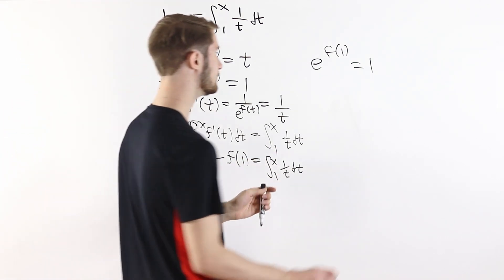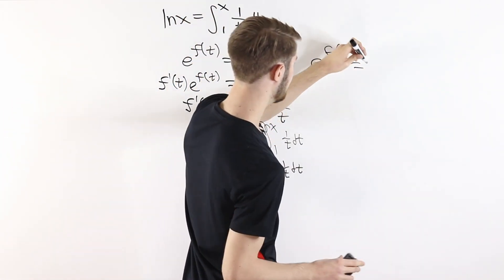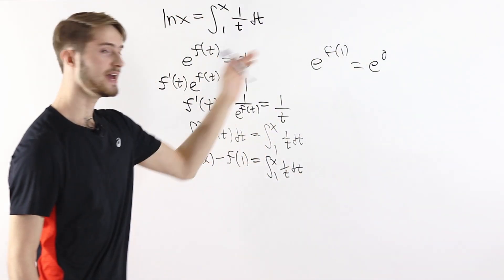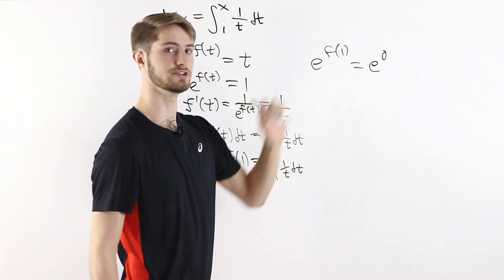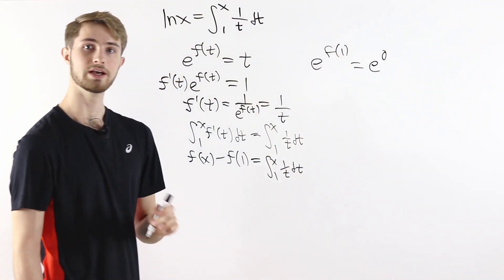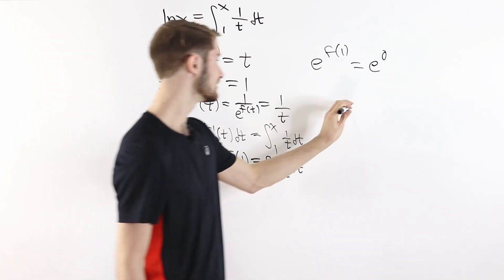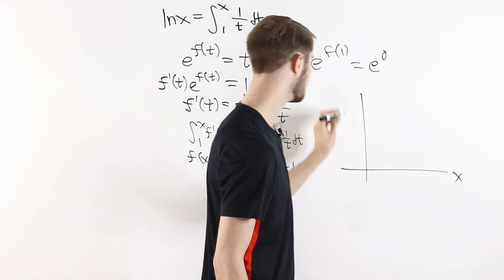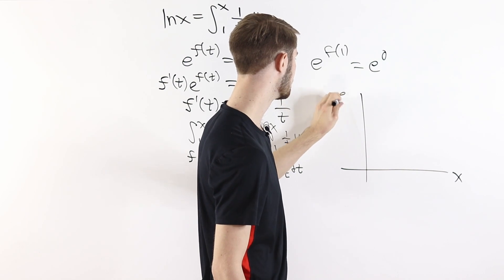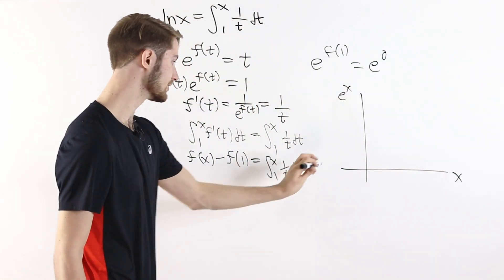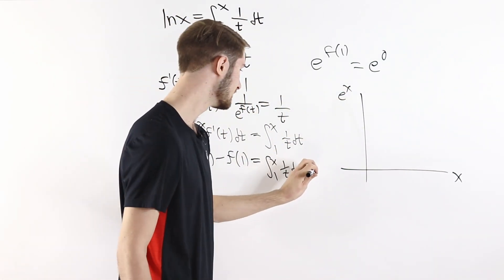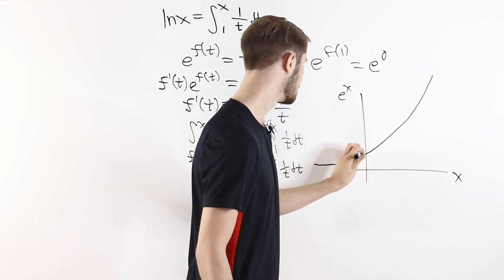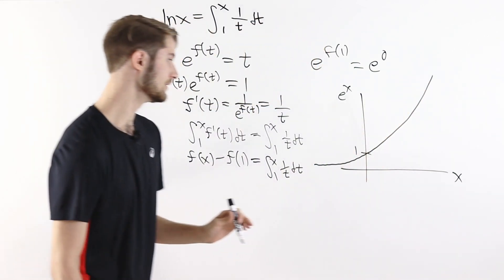We know that 1 is the same as e to the 0, so e to the f of 1 equals e to the 0. If we look at the graph of e to the x, we have x on the horizontal axis and e to the x on the vertical axis. The function looks something like this, and right here this is the value of 1.